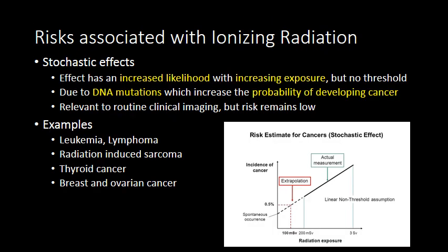The second category of risk associated with ionizing radiation is stochastic risks or stochastic effects. These are consequences of radiation exposure that are increasingly likely with increasing radiation exposure, but do not have a set threshold or a specific dose at which we know they will occur. Stochastic effects occur due to DNA mutations that result in increased risk of unrestricted cellular division and increased probability of developing cancer.